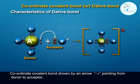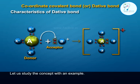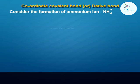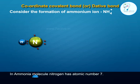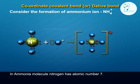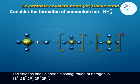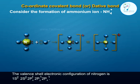The coordinate covalent bond is shown by an arrow pointing from donor to acceptor. Let us study the concept with an example. Consider the formation of ammonium ion NH4+. In the ammonia molecule, nitrogen has atomic number seven, and its valence shell electronic configuration is 1s2 2s2 2px1 2py1.